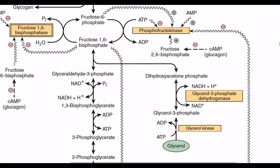Now glycerol 3-phosphate undergoes the next reaction. Glycerol 3-phosphate dehydrogenase acts on it. We remove 2 hydrogens from glycerol 3-phosphate, and it converts into dihydroxyacetone phosphate (DHAP).